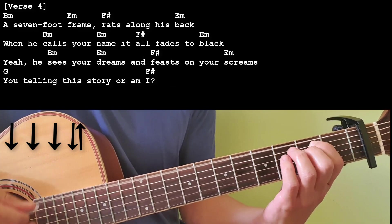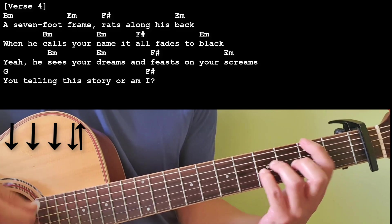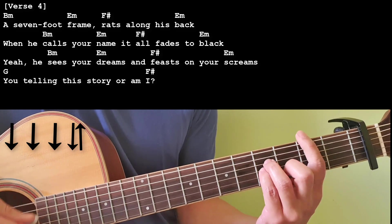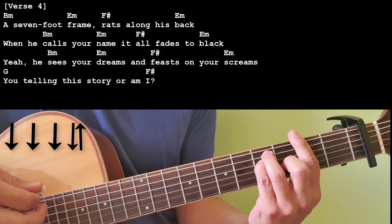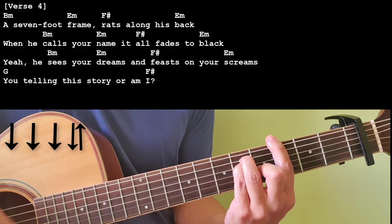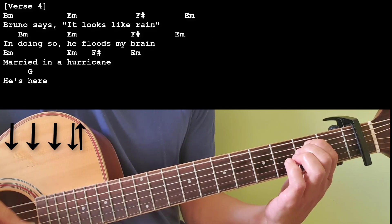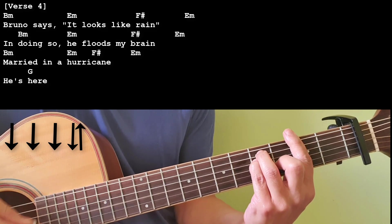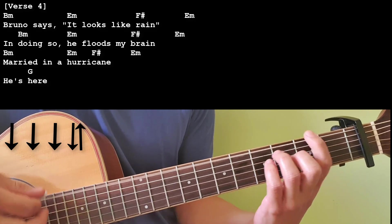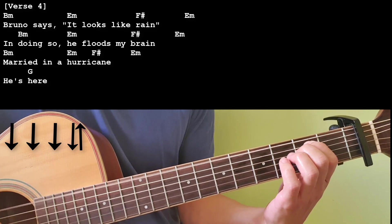Seven foot frame, rats along his back. When he calls your name, it all fades to black. Yeah, he sees your dreams, feasts on your screams. Bruno says it looks like rain. In doing so he floods my brain. Married in a hurricane.